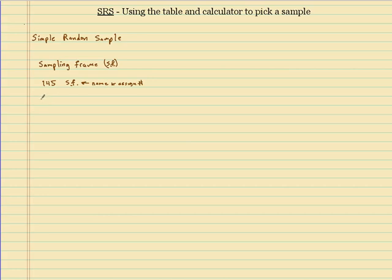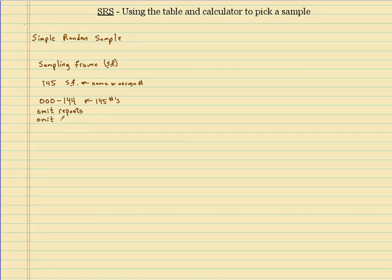Let's say we have 145 in our sampling frame. One way we could assign numbers is 000 to 144 — that's 145 numbers with three digits. If you go into a table of random digits and look at three numbers, the possibilities range from 000 to 999.